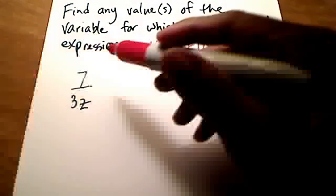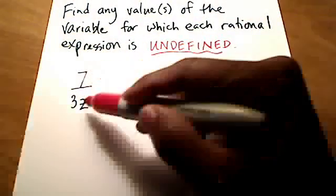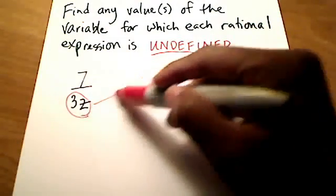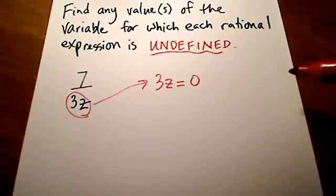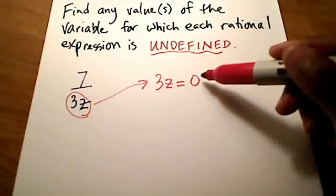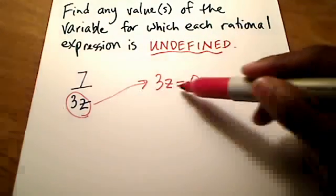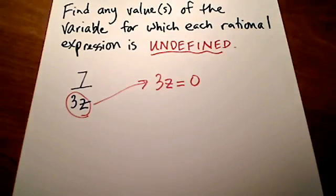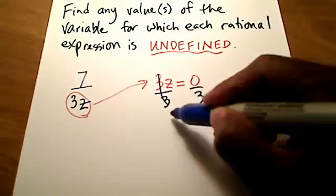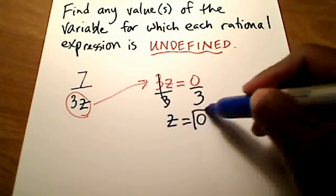So what I'm going to do here is I'm going to ignore the numerator, and I'm just going to focus on the denominator for a second, and I'm going to set the denominator equal to zero. If you take the denominator, set it equal to zero, and solve this equation here for z, for the variable, then you'll get our answer. Well, if you divide both sides by 3, it's probably easy to see that z is zero.